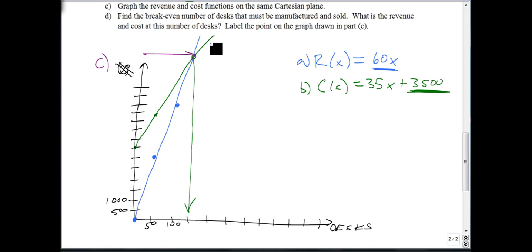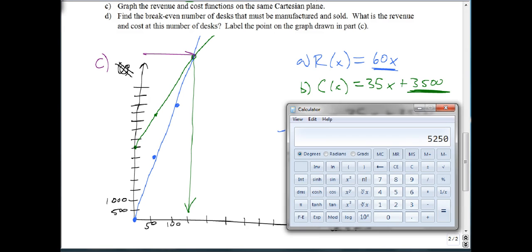Well, to solve this, we simply set the two equal to each other. So 60x equals 35x plus 3,500. We subtract 35x from both sides, get 25x equals 3,500. Get that calculator out again, divide it by 25, and we were really close. X is 140.